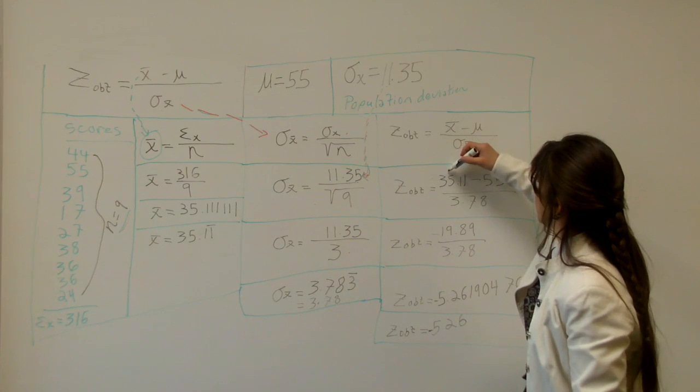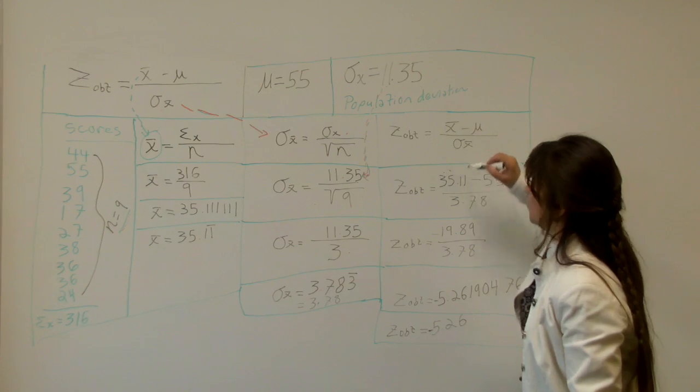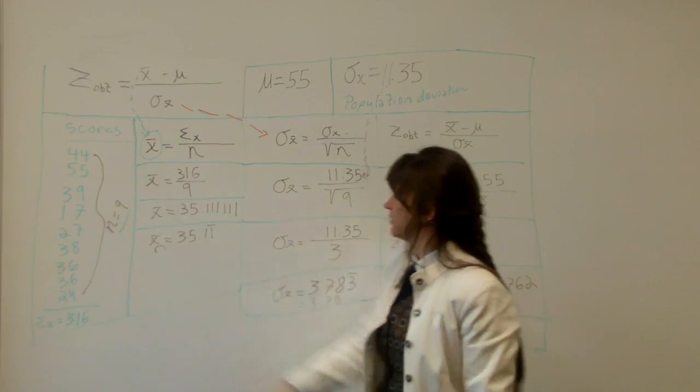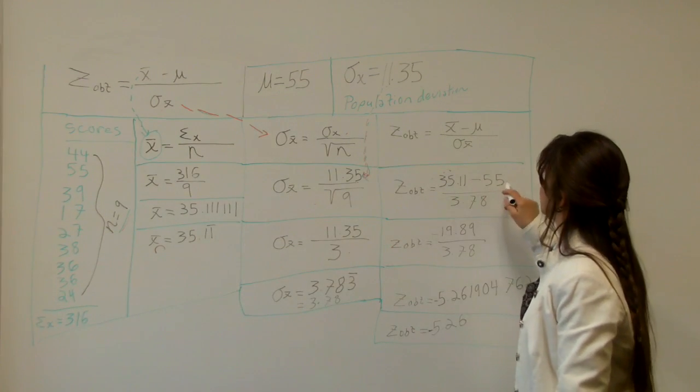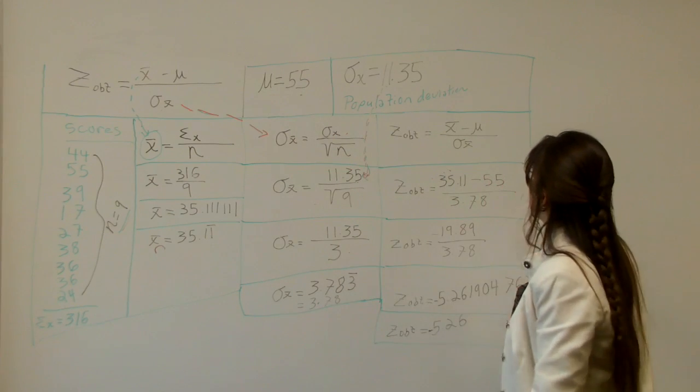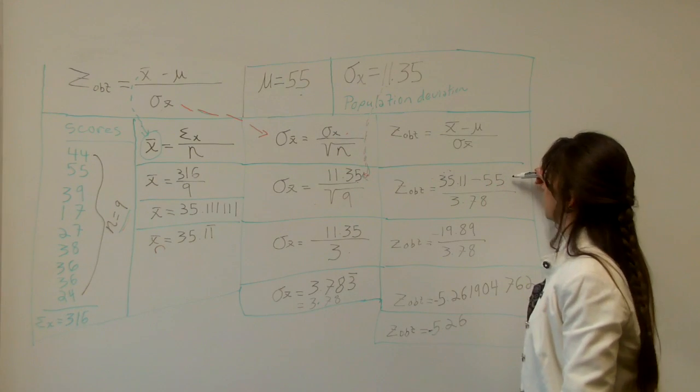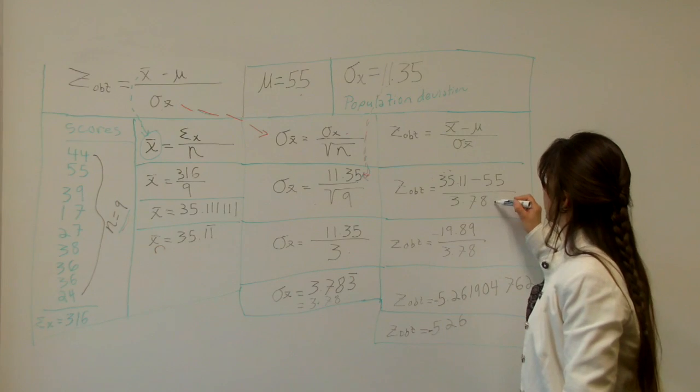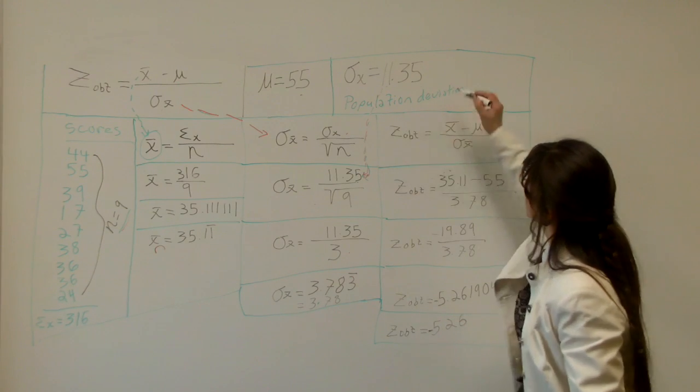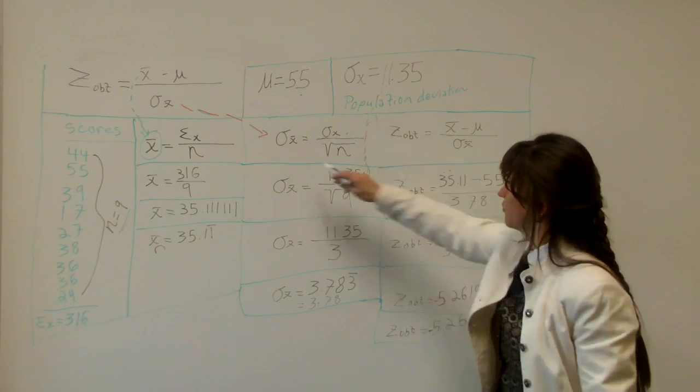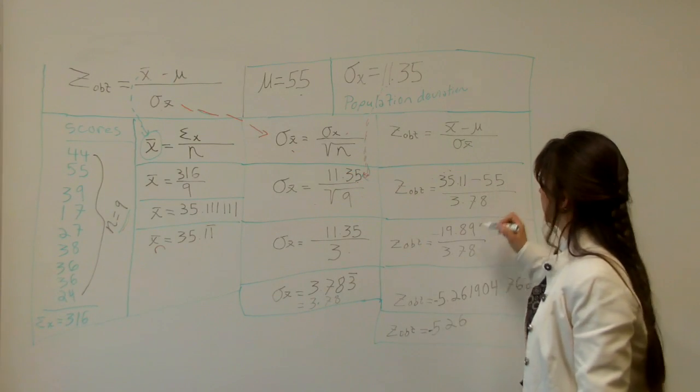We take the numbers 35.11, remember that's from here, minus 55, that comes from here, that's the mu, the population mean. And that's divided by the population deviation mean, which we figured out over here, which is 3.78.